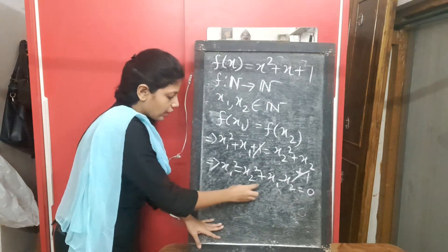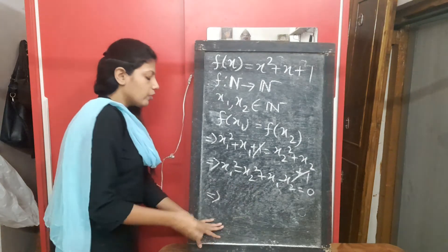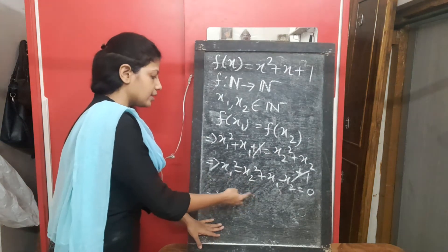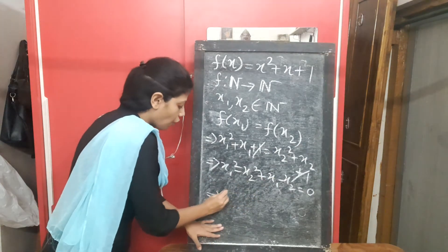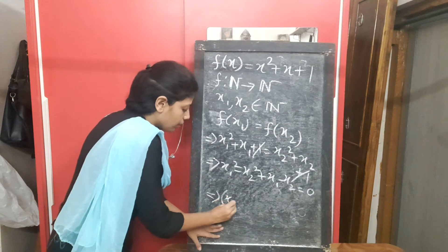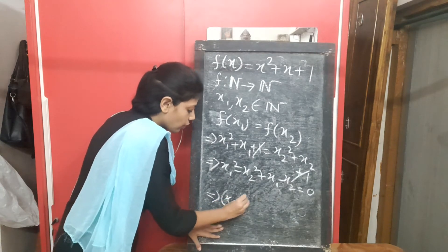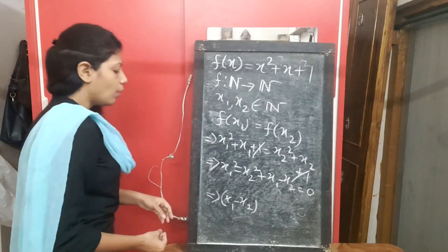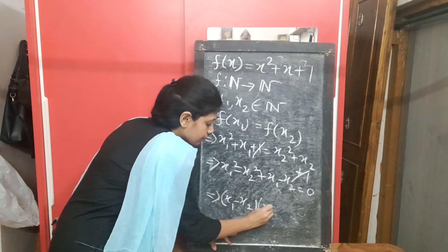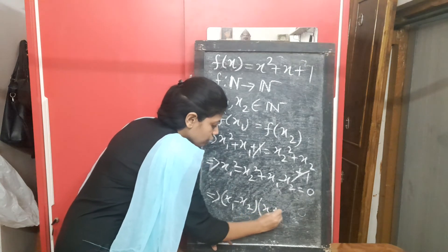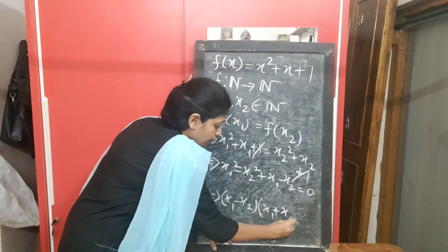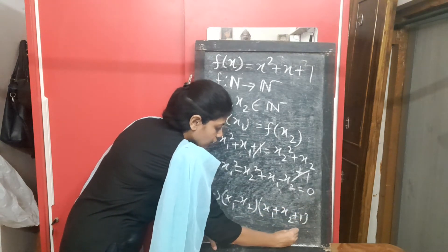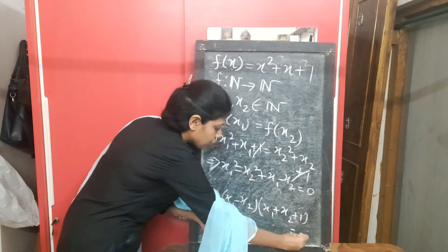If I factorize this, I will get (x1 + x2)(x1 - x2). Then taking common (x1 - x2), what will be left is x1 + x2 + 1 = 0.